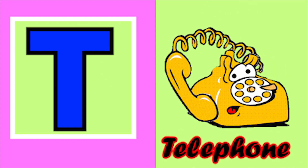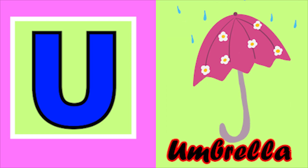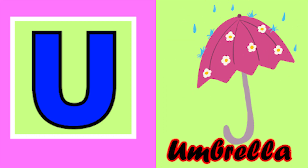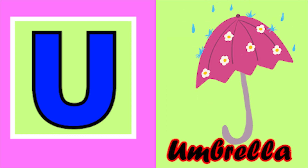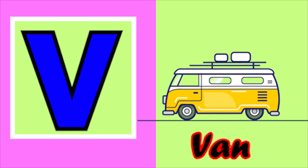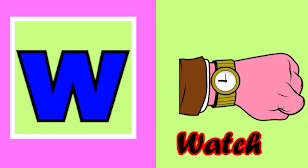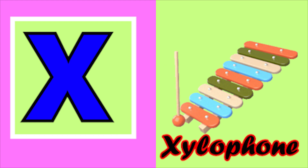T for telephone, U for umbrella, V for van, W for watch, X for xylophone.